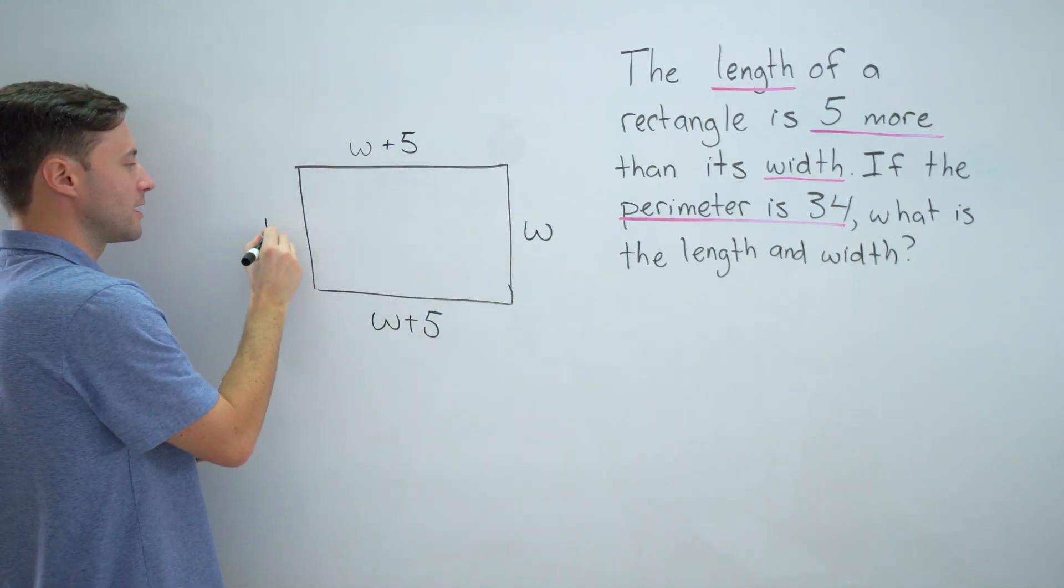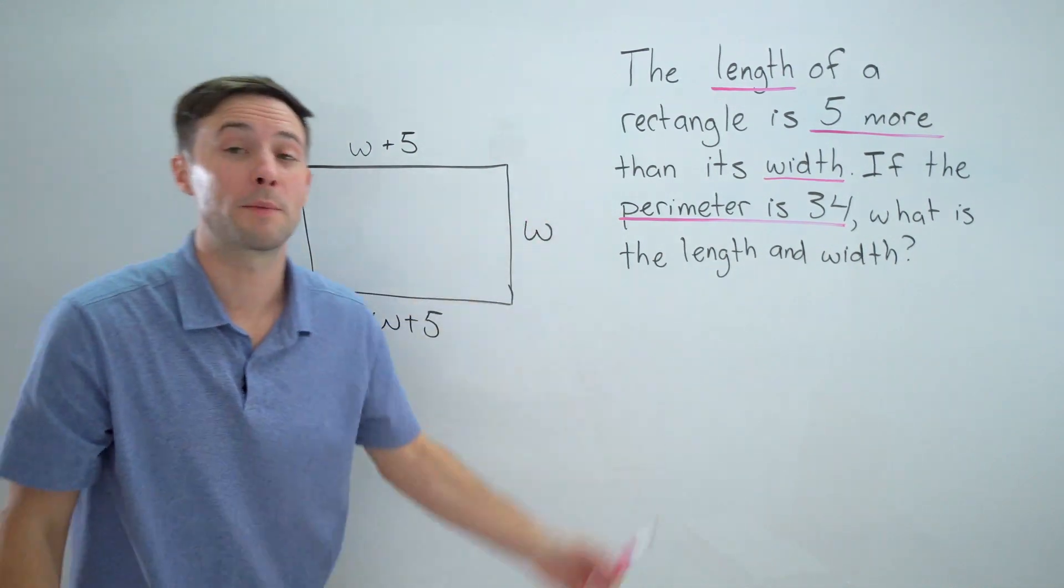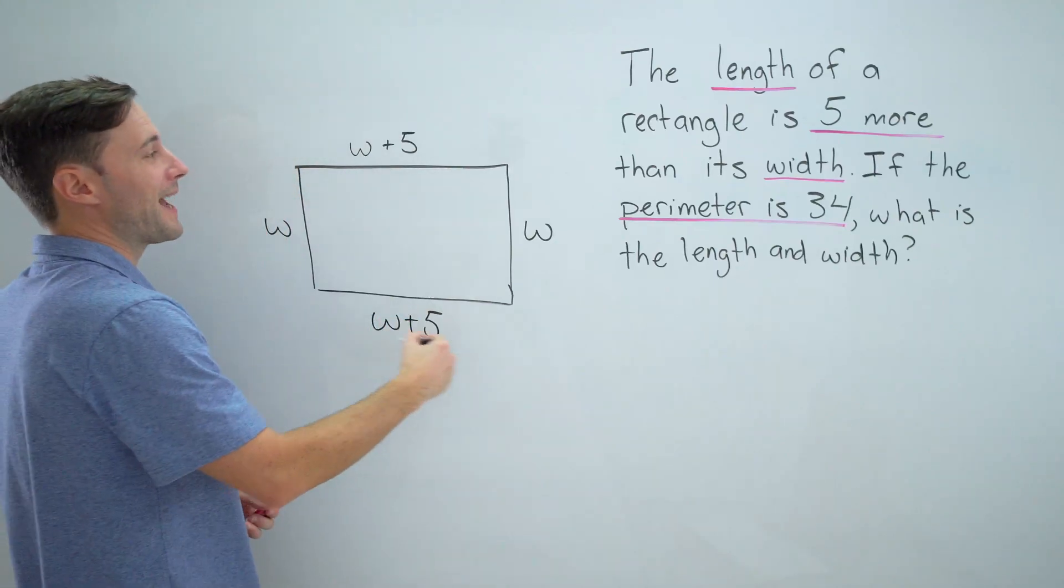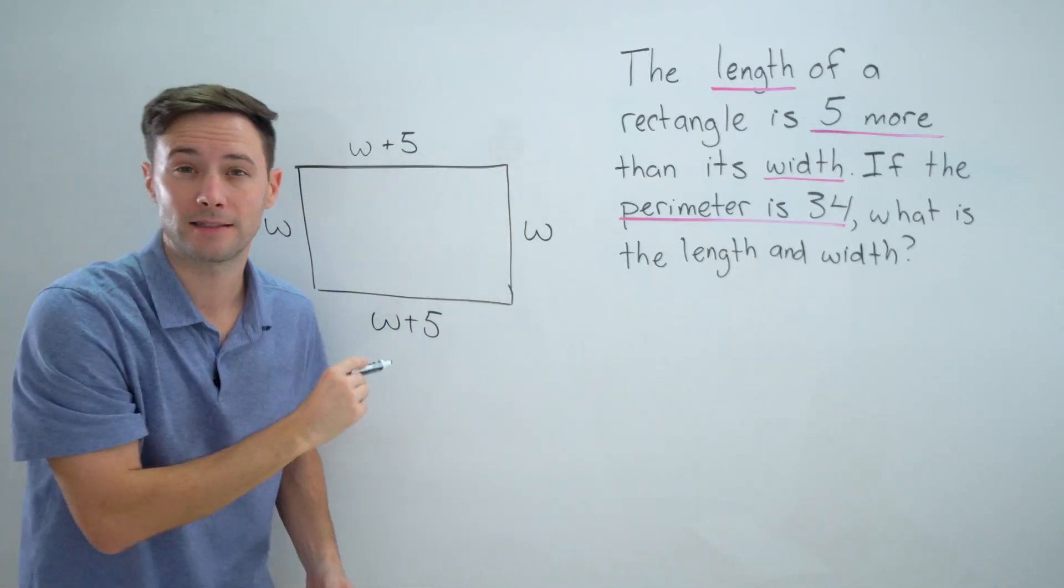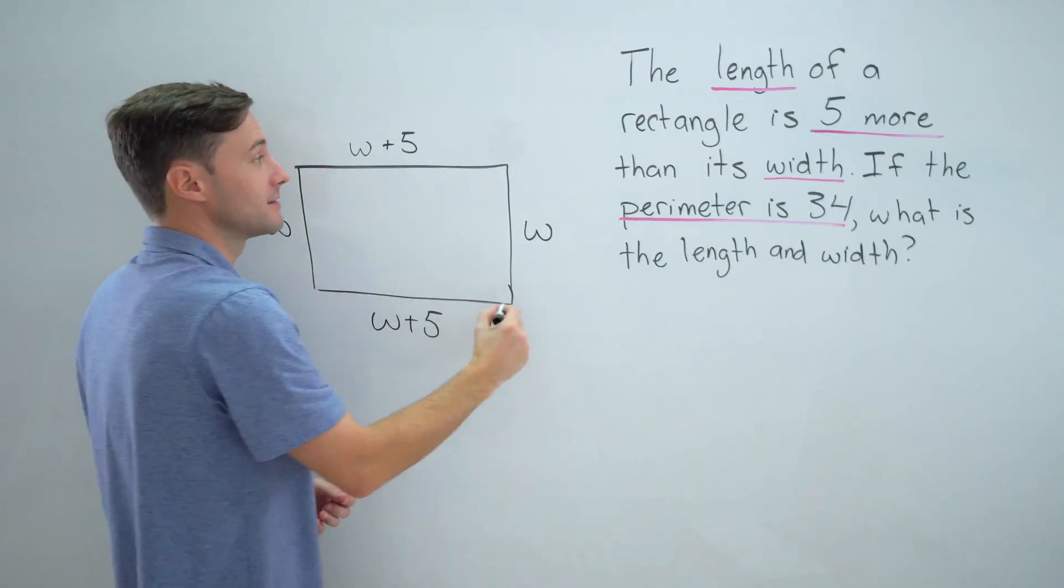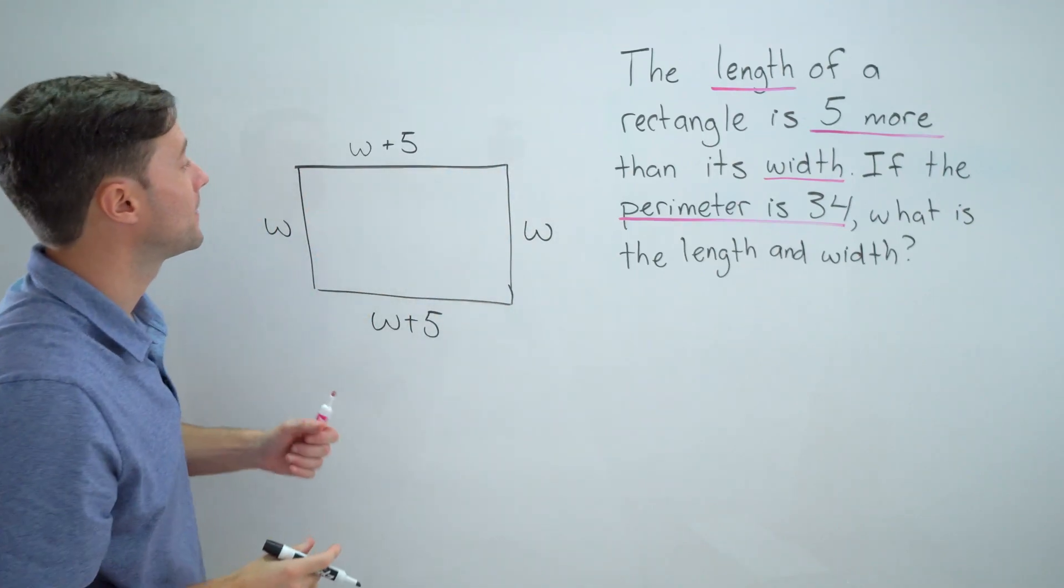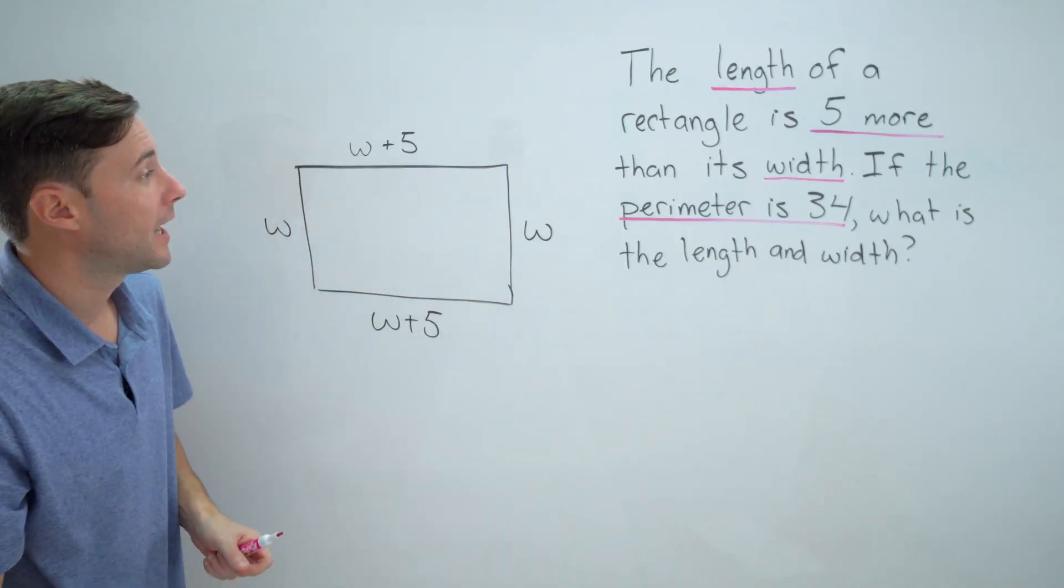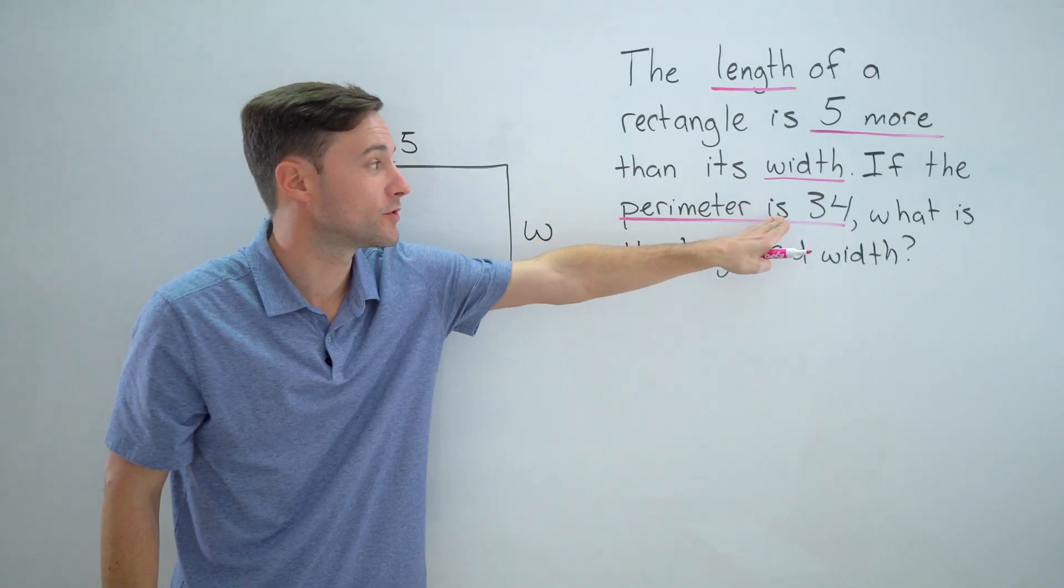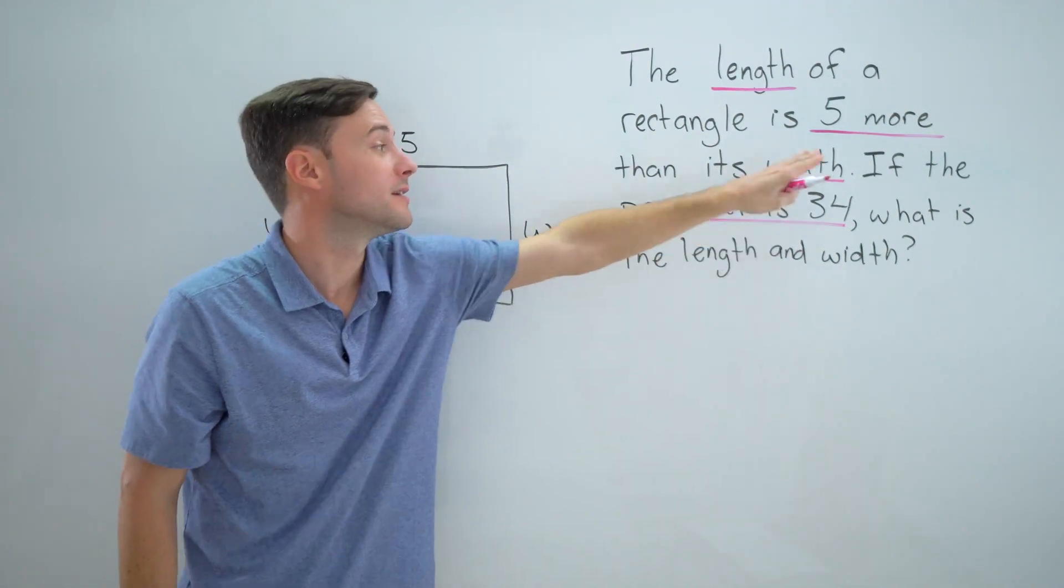Now we want the perimeter, which means I'm going to be adding up all of these sides. The perimeter is the distance around the shape—it's not area where we're multiplying—and that perimeter has to be equal to, is means equals, 34.